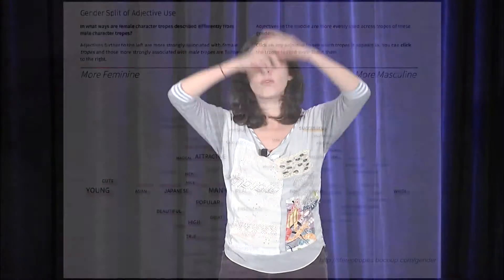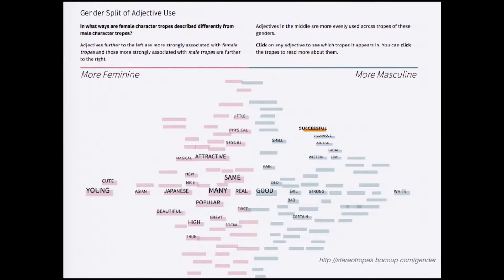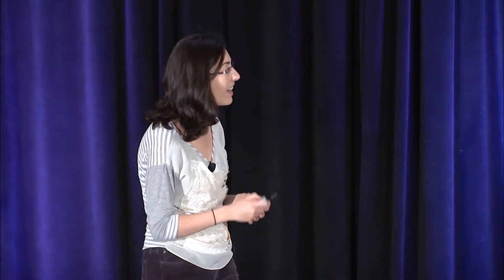Because we had all these adjectives tagged by the tropes they appeared in, we could look at the overall adjective body and compare male versus female adjectives. This was really cool because we could start seeing cultural patterns—like women being described as 'cute' and 'young,' and men being described as 'strong' and for some reason 'white.' It gave us a really beautiful overview directly from the language into our corpus.